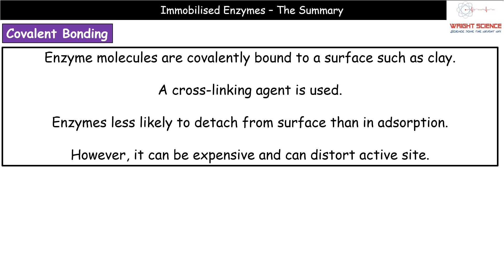The second way to immobilize enzymes is covalent bonding. We take our clay and covalently bind enzyme molecules to the surface using a cross-linking agent, which creates cross-links — types of covalent bond — holding the enzymes onto the surface. One key advantage over adsorption is that they're less likely to detach from the surface. The downside is this can be expensive, and we can still see distortion of the active site, which impacts enzyme activity.